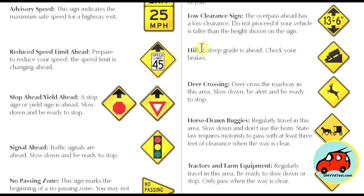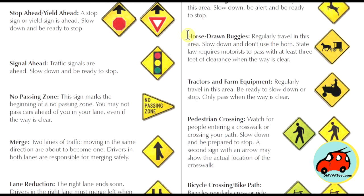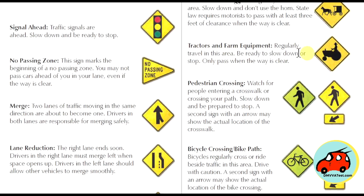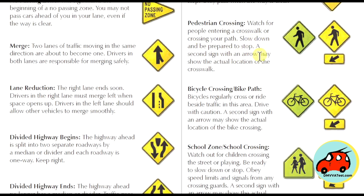A hill sign shows that a steep grade is ahead — check your brakes. A deer crossing sign means you have to slow down and be alert. A horse-drawn buggy sign indicates horse-drawn vehicles regularly travel in this area — slow down, don't use your horn, and state law requires motorists to pass with at least three feet of clearance when the way is clear. A tractor sign means farm equipment regularly travels in the area — be ready to slow down or stop, and only pass when the way is clear. Pedestrian crossing signs mean you should watch for people entering the crosswalk or crossing your path — slow down and be prepared to stop. A second sign with an arrow may show the actual location of the crosswalk.